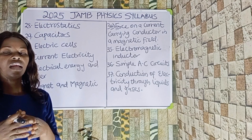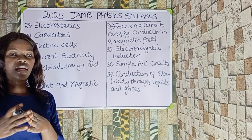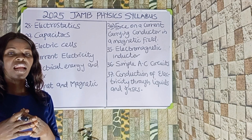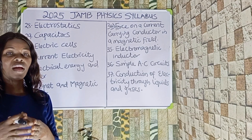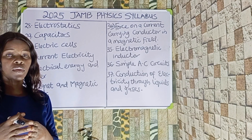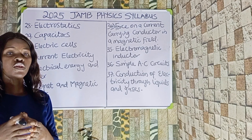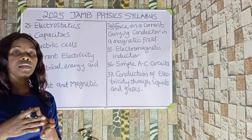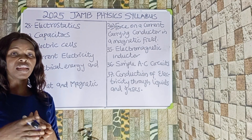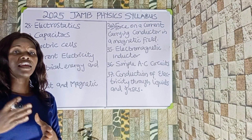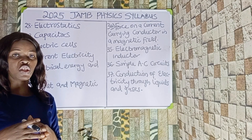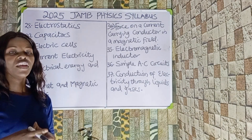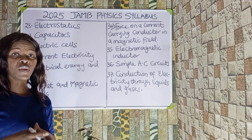Number twenty-nine is the electric cell — an electric cell is simply a battery. We should know what an electric cell is, how to arrange electric cells in series and in parallel, and how electric current is produced. We have the primary cell and the secondary cell, and we should know examples of each, the electrolytes, the anode and cathode, and the EMF of each cell.